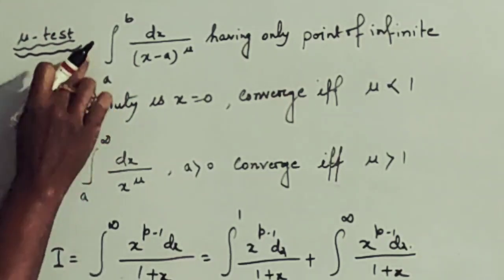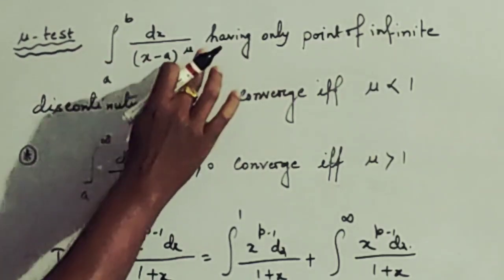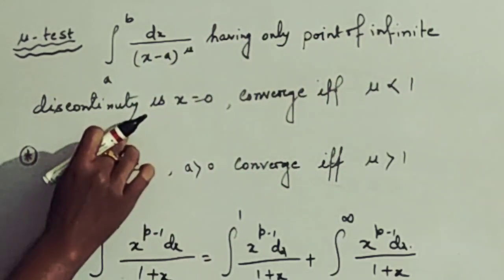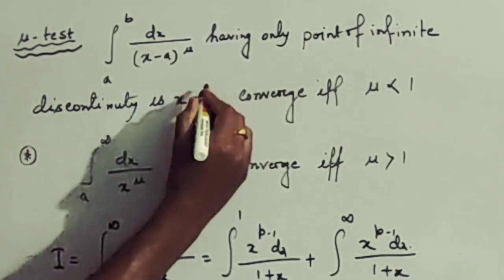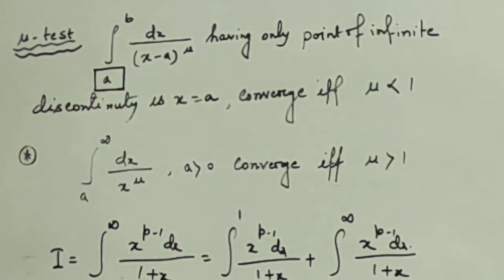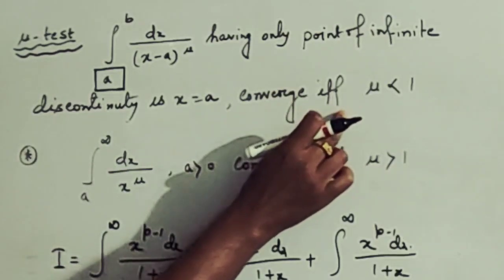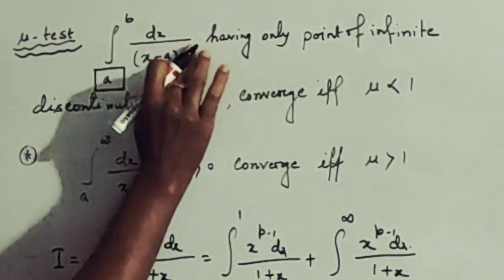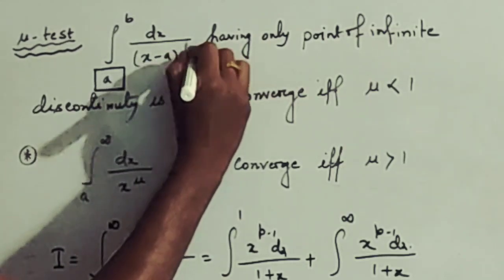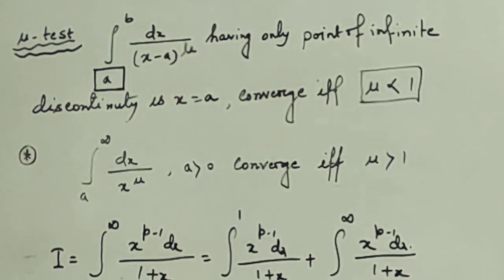The mu test for a finite interval: consider the integration from a to b of dx by (x minus a) to the power mu, which has an infinite discontinuity only at x equals a, the lower point. This integration is convergent if and only if mu is less than 1. This is the first test.